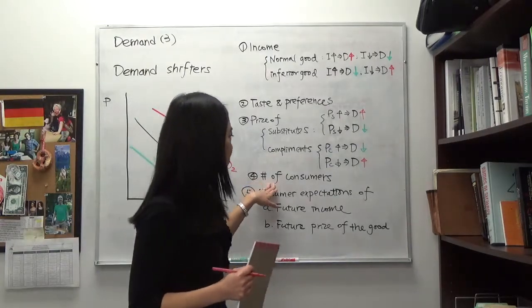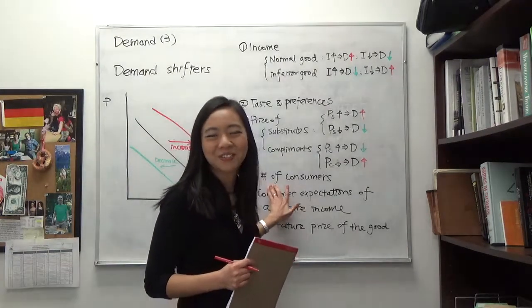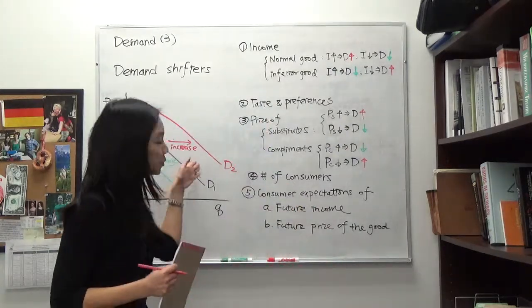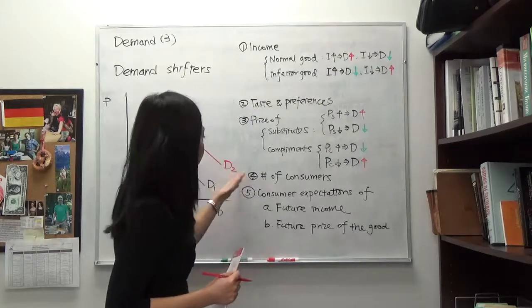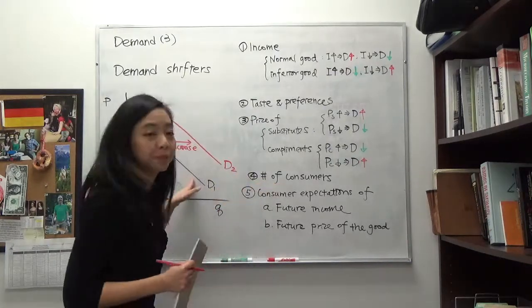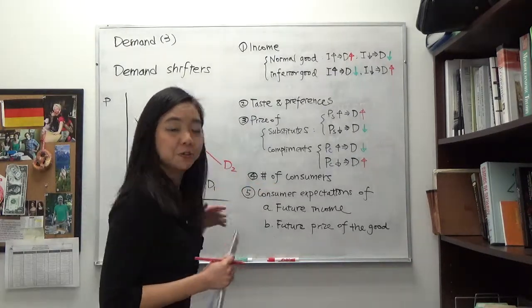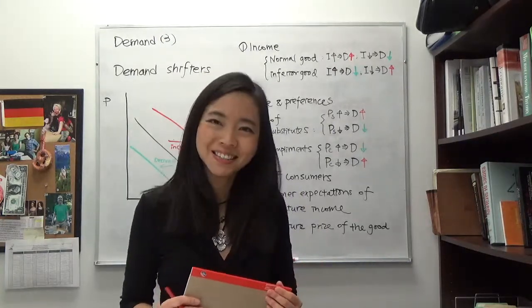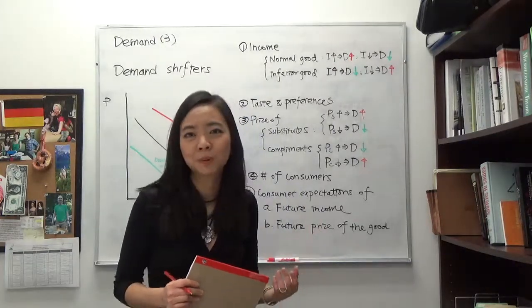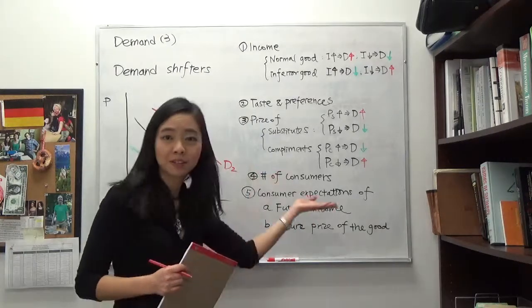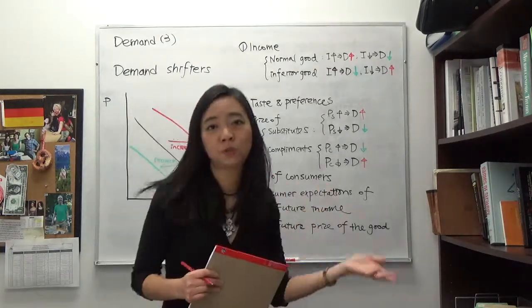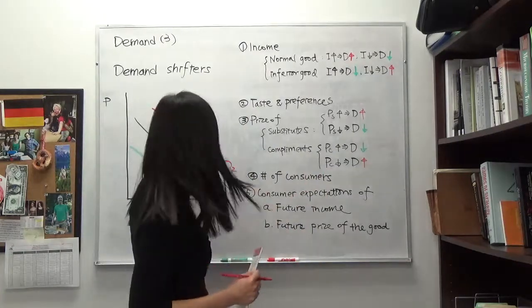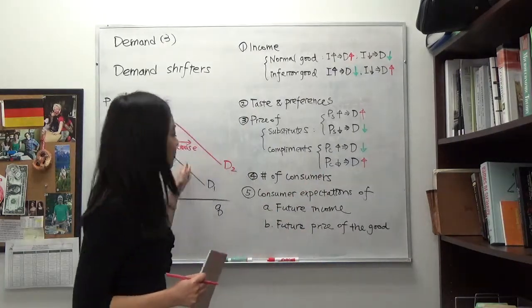The fourth item is the number of consumers. If you have more consumers, that's going to shift the demand curve to the right. If you have fewer consumers, that shifts the demand curve to the left. For example, Houston is always a city of immigrants — people come in to find jobs. If we have more immigrants, we have more consumers looking for housing, and the demand for rental apartments is going to go up, shifting to the right.